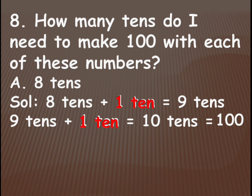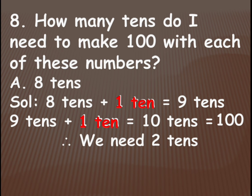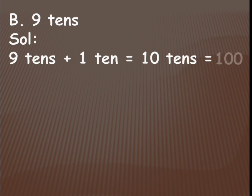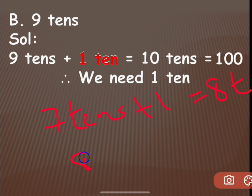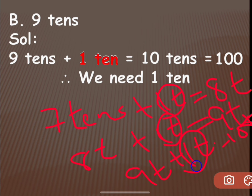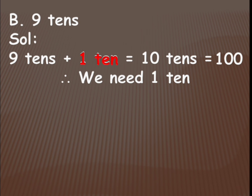So 1 ten, 2 tens — you need to add 2 tens, so write it down. The next one is 9 tens. If you add 1 ten to 9 tens it becomes 10 tens, which is 100 — so you need only 1 ten, write it down. If it is 70, that is 7 tens: if you add 1 ten it becomes 8 tens, then add 1 more ten it becomes 9 tens, then add 1 more ten it becomes 10 tens which is 100. So 1, 2, 3 tens you need to add — for 7 tens you need to add 3 tens to make 100.